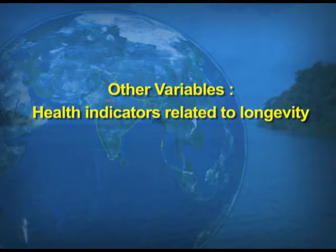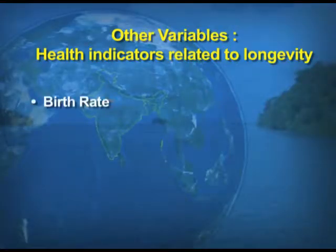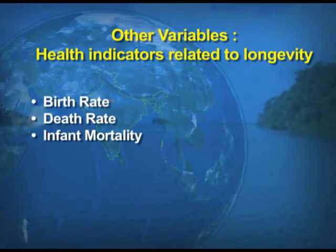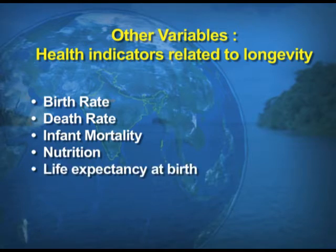The other variables for the Human Development Index include health indicators related to the long life of people. These are: birth rate, death rate, infant mortality, nutrition, and life expectancy at birth. These are the additional variables related to health indicators of human development.